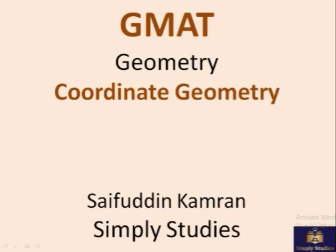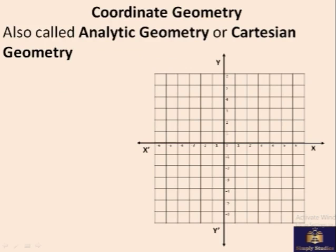Coordinate Geometry. In coordinate geometry, which is also called analytic or Cartesian geometry, we have these two axes, x-axis and y-axis. The x-axis is horizontal and y-axis is vertical. So whatever points are there are in this two-dimensional plane.